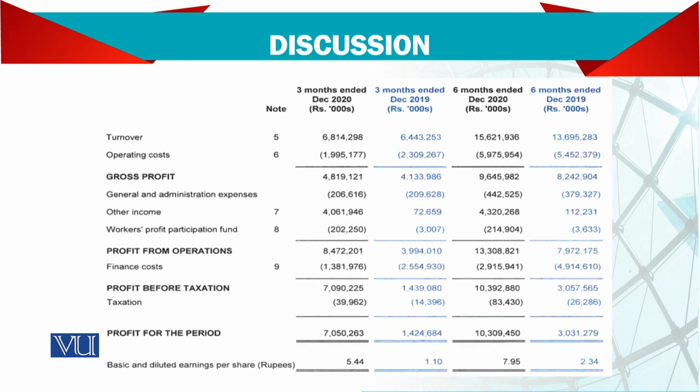Then, worker participation funds — which is a requirement in Pakistan law that you need to share some of your profit with the workers as well — so that is also a reduction. Then profit from operations, and then finance cost. Notes are not attached to it, although in the original, notes were attached. Then profit before taxation, and the tax, and the profit for the period is given.